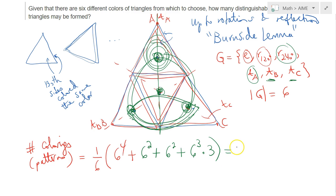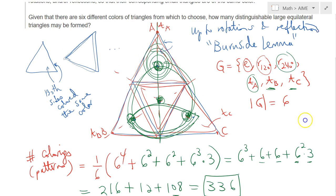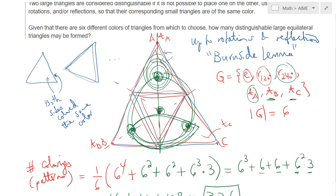That would simply be equal to, simplifying by six, six plus six plus six squared times three. And finally we get that six cubed is 216 plus 12 plus 36 times three, which is 108. So the two is 120. For a total of 336 different distinguishable large equilateral triangles can be formed using these small type of equilateral triangles.